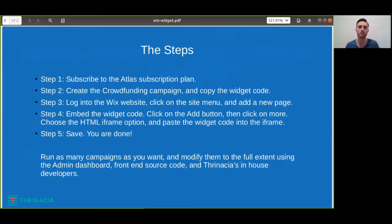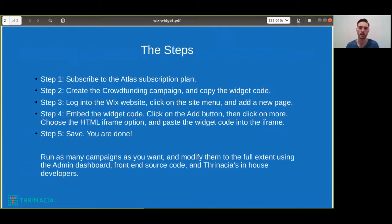First of all, you need to subscribe to the Atlas subscription plan. Then you'll need to create a crowdfunding campaign and copy the widget code. Once you've done that, you need to log into your Wix website, click on the site menu, and add a new page. Step four, you have to embed the widget code — click on the add button, then click on more.